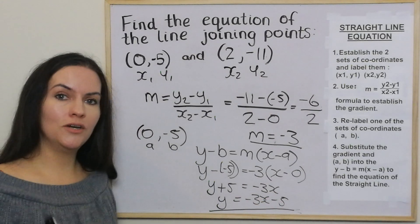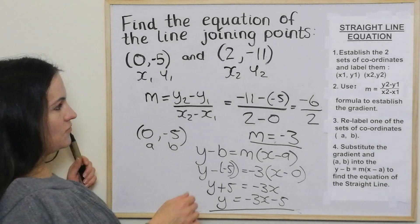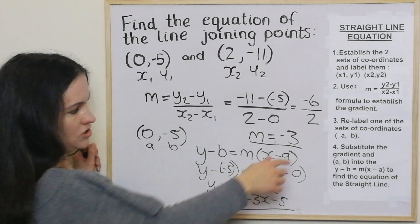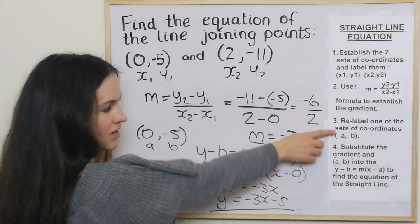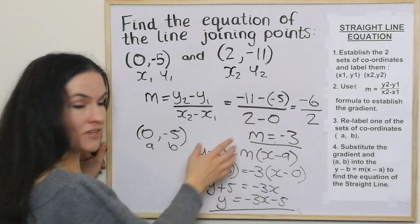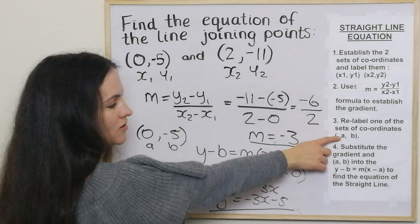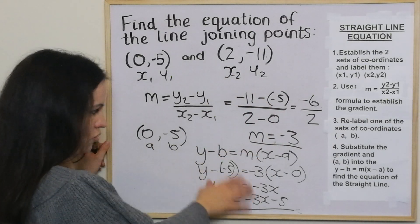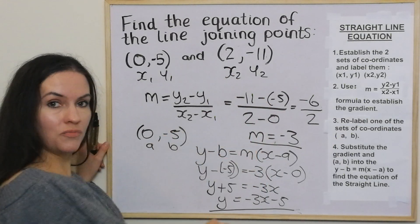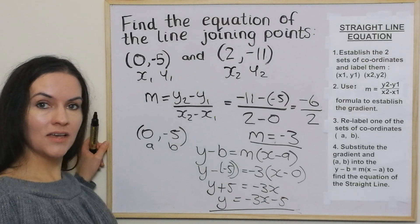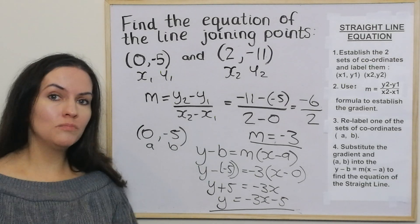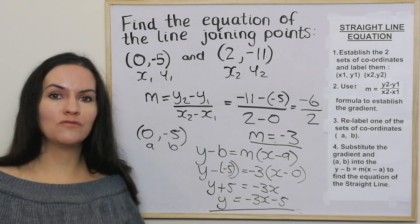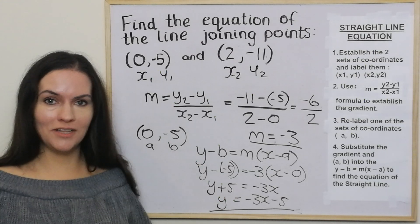I'll just point out that sometimes you might be given the gradient and just one set of coordinates, in which case you can just start from step 3. If you already have the gradient, you label one of the points a and b and go basically downwards from there. I hope this has been helpful — please like, please subscribe, and feel free to suggest any other National 5 maths or higher maths videos you'd like to see.